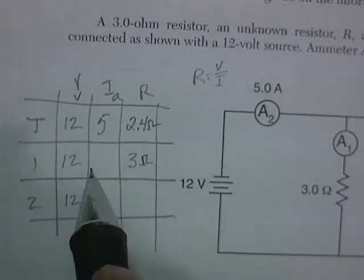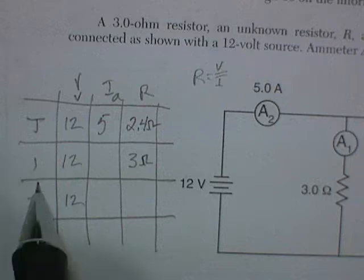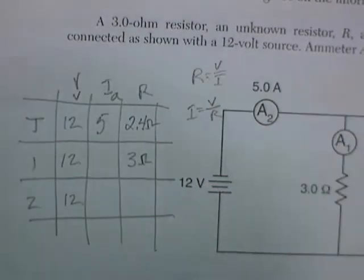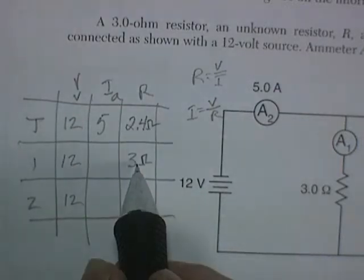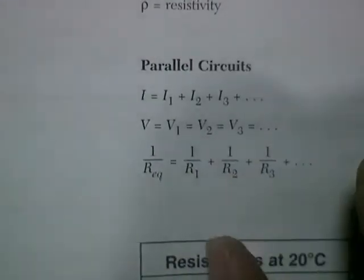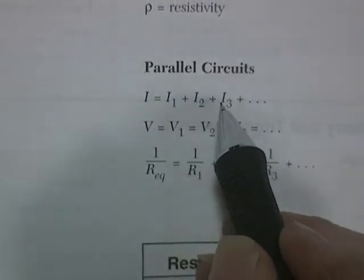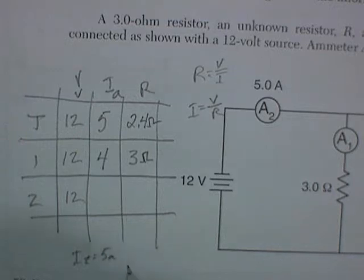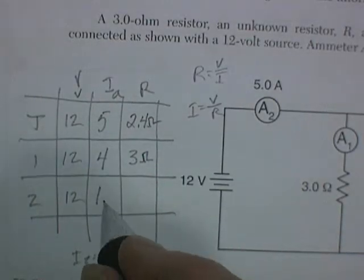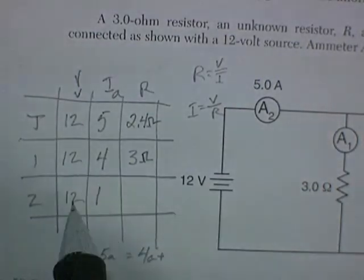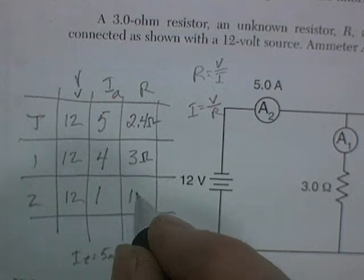As long as we're here, let's find everything else. We can find the current in this resistor because Ohm's law says resistance is voltage over current, but current is voltage divided by resistance. So 12 volts divided by 3 ohms would give us 4 amps of current. And then, ready for this? In a parallel circuit, the total current equals the sum of the individual currents. So if the total current is 5 amps, and that equals 4 amps plus the unknown, we can just throw in 1 amp here. And 4 plus 1 is 5. We can find the resistance over here because we know that resistance is voltage divided by current. So 12 volts divided by 1 amp gives us 12 ohms of resistance.